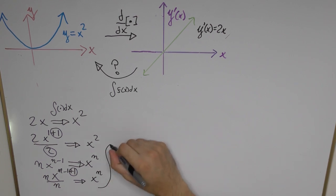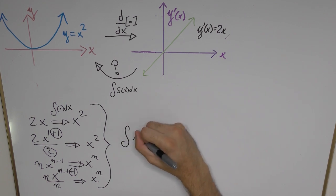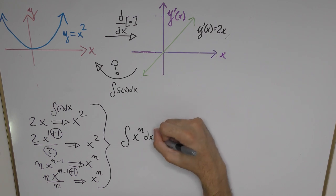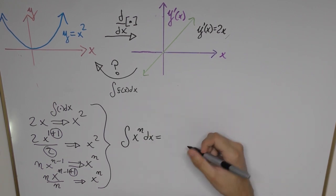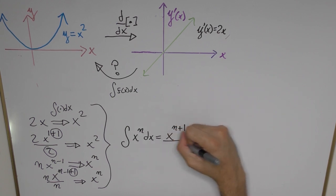So let's generalize that into a very elegant formula. So let's write the integral of any function x to the power of n times dx is simply going to be x to the power of n plus 1 divided by n plus 1.